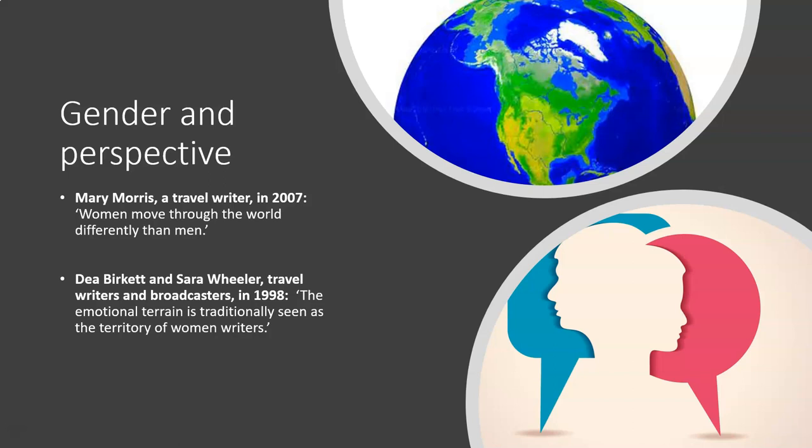There are just a few statements here by famous writers that help us begin to understand gender and perspective. The first one is from Mary Morris, a famous travel writer. She said: 'Women move through the world differently than men.' Now whether you agree with that or not, we do need to think about gender and perspective and how that might influence the style and language choices in a text.